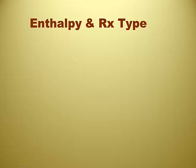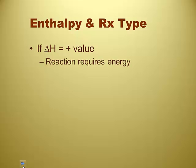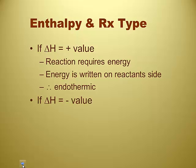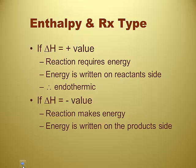Alright, so let's see how this is different. So we have enthalpy with different reaction types, right? Just as a reminder, if the delta H value is positive, that means that the reaction requires energy, or that the energy is written on the reactant side of the reaction, and therefore we've got an endothermic reaction. If delta H is a negative value, that means that the reaction makes energy. Energy is written on the product side of the reaction, and it's exothermic.